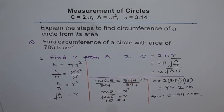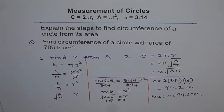Let's check it. If you do 2 times the square root of — within brackets — area 706.5 times π which is 3.14, close bracket, and say equal to, you get 94.2: exactly the same answer.